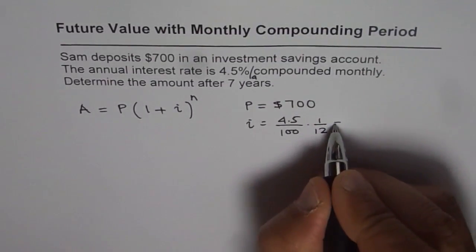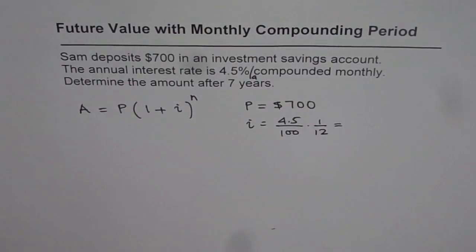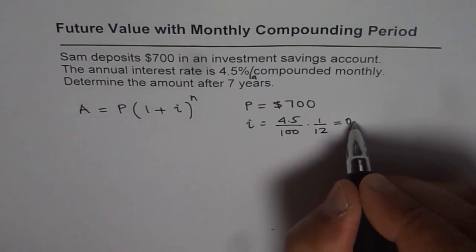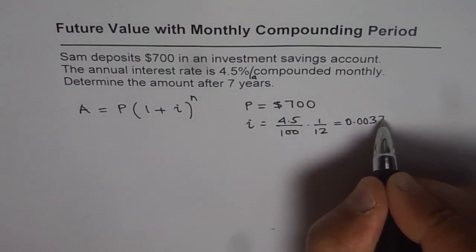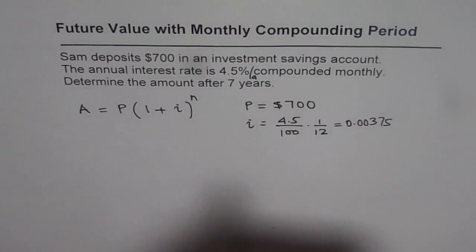So let us calculate this value. It is 4.5 divided by 100 divided by 12, which gives us a value of 0.00375. So that is the value of I.